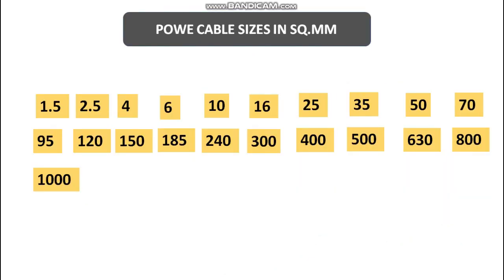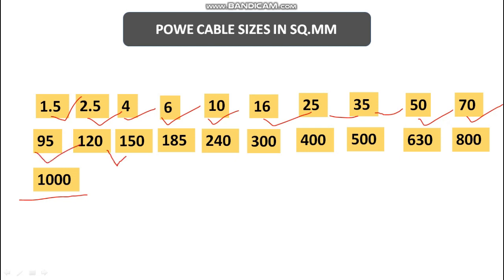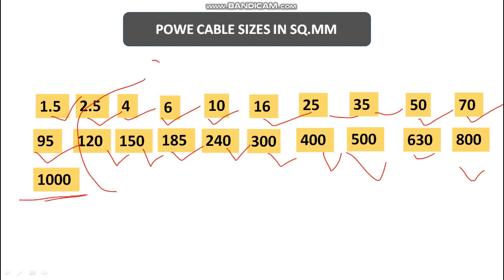Now coming to sizes: in the market, power cables are generally found from 1.5 to 1000 square mm. The sizes are: 1.5, 2.5, 4, 6, 10, 16, 25, 35, 50, 70, 95, 120, 150, 185, 240, 300, 400, 500, 630, 800, and up to 1000 square mm.